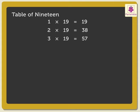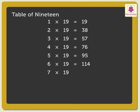4 × 19 are 76, 5 × 19 are 95, 6 × 19 are 114, 7 × 19 are 133.